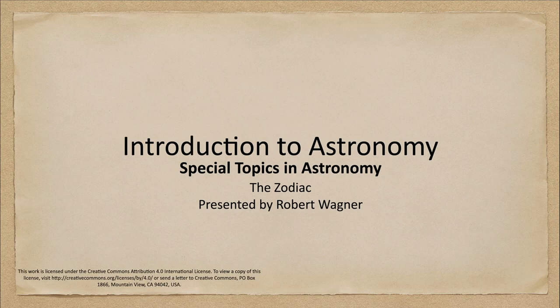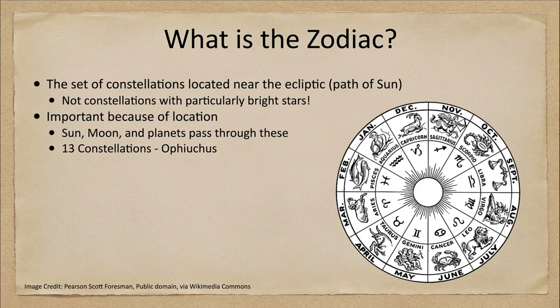Greetings and welcome to the introduction to astronomy. In this week's special topic we are going to talk about the zodiac and what that actually means in terms of what we study in astronomy. We often associate the zodiac with astrology — astrology and astronomy were actually the same thing a thousand years ago or even a little less, so the people who studied astronomy were also those who did astrology.